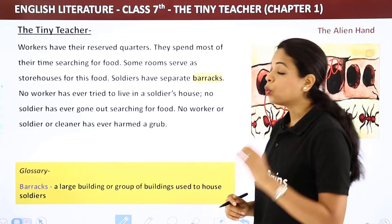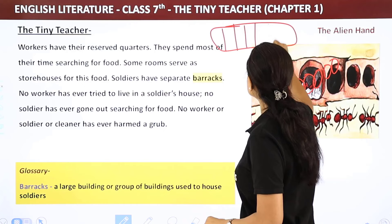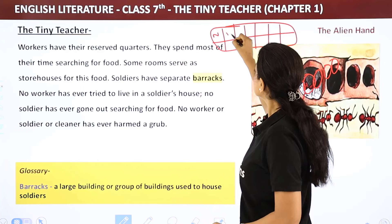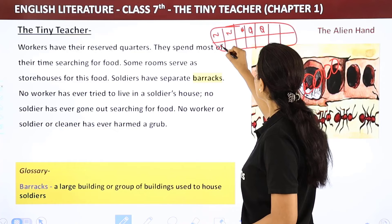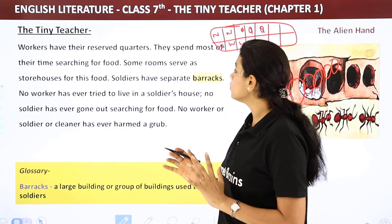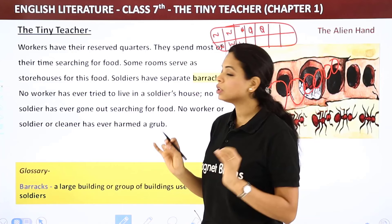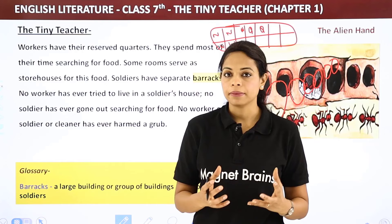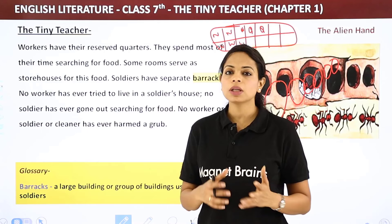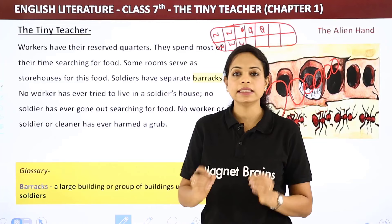Workers have their reserved quarters. Their job is to arrange food — they spend most of their time searching for food. Some rooms serve as storehouses for this food, because during the monsoons it is not easy for the ants to go out. So they store food in advance inside the ant hill.